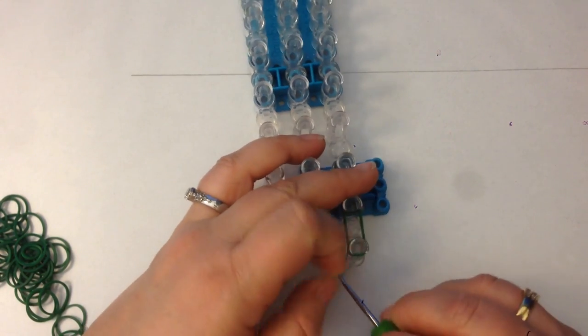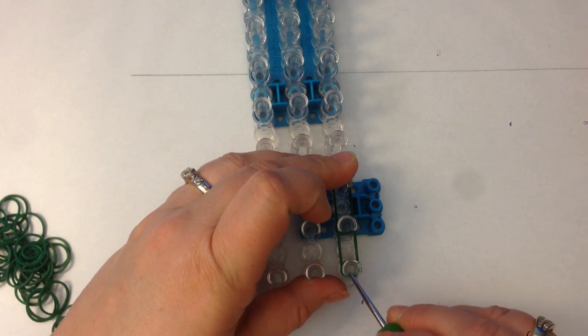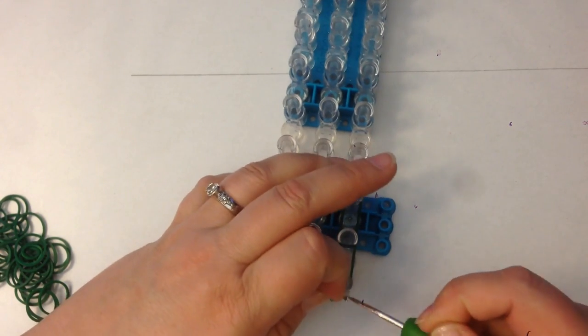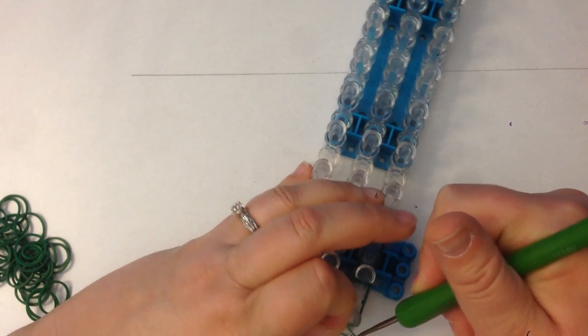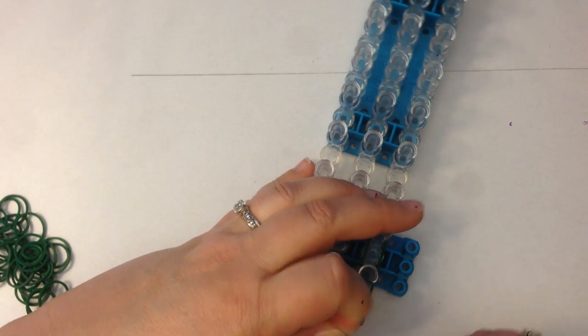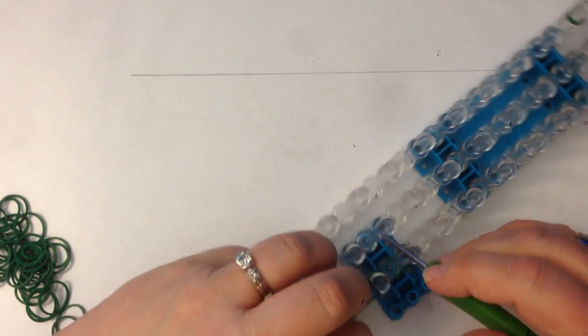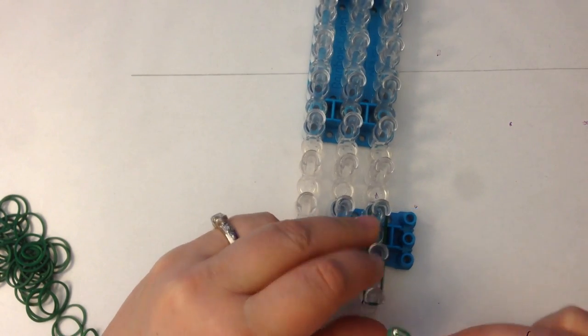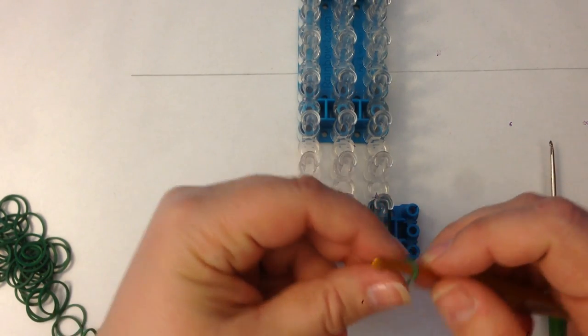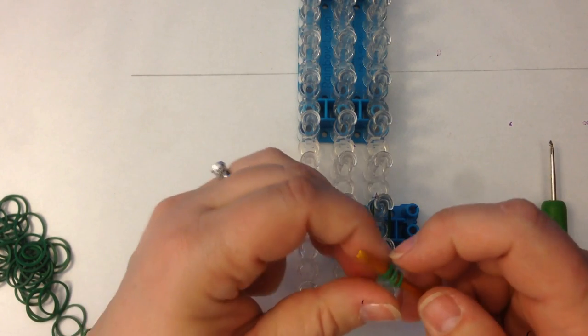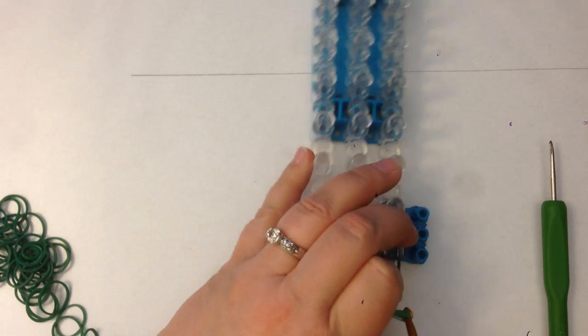Three and four. And place an end cap on this last peg here. Take your hook, wrap it once and twice and three times and then we're going to slide these bands onto our peg here.